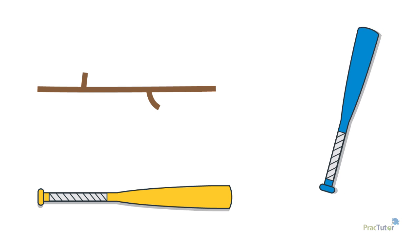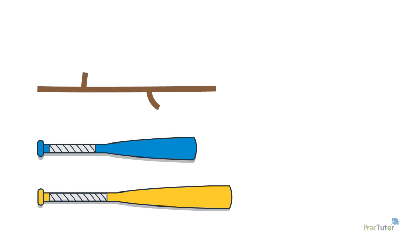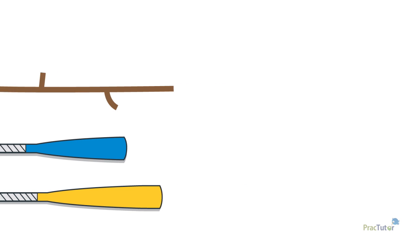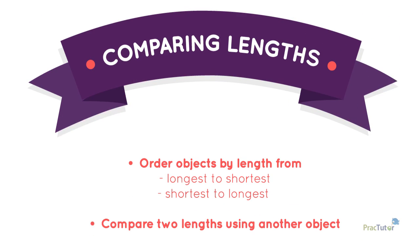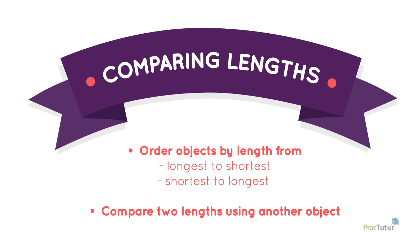When things aren't right next to each other, it can make them look longer or shorter than they really are. So, when comparing length, you can put objects in order from longest to shortest or shortest to longest. You can also use one object to compare the lengths of two other objects.